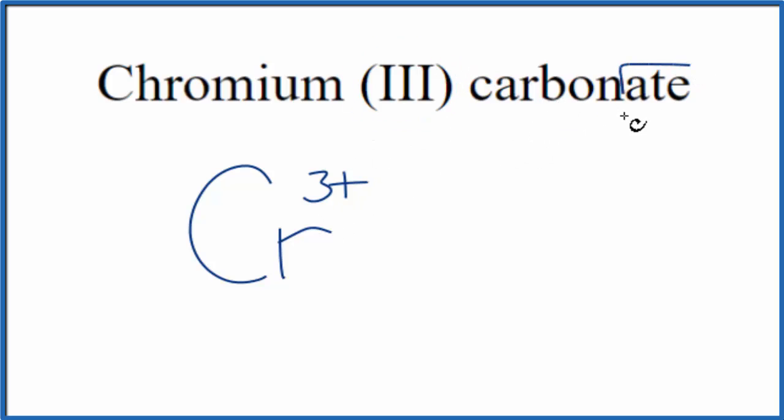For the carbonate, this A-T-E, you won't find that on the periodic table. This is a polyatomic ion. So you either memorize that the carbonate ion here is CO3, 2-, or, if you're allowed, you look it up on a table of polyatomic ions.